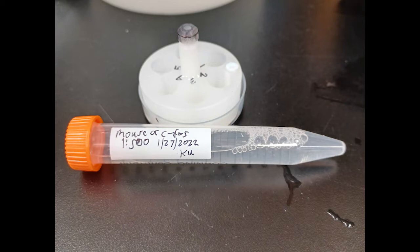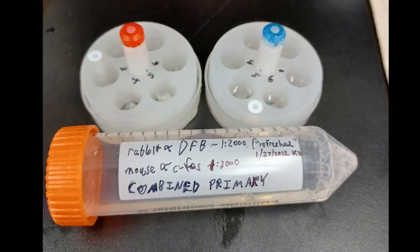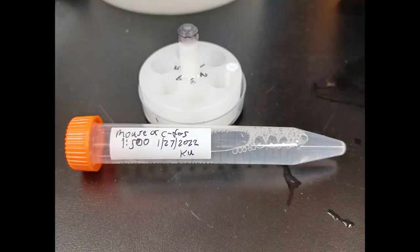Did you notice the colors of the net well handles in these pictures? The red and blue handled net wells have solution in them that you will pour into that bigger combined primary tube. And the black handled net well has solution that you will pour into the smaller C-FOS 1-500 tube.